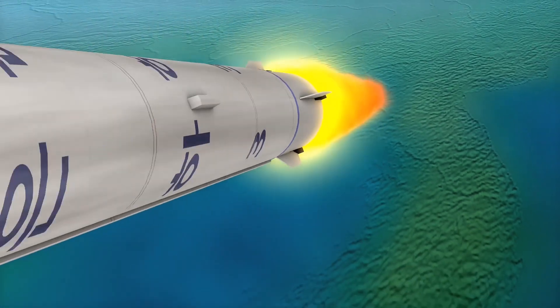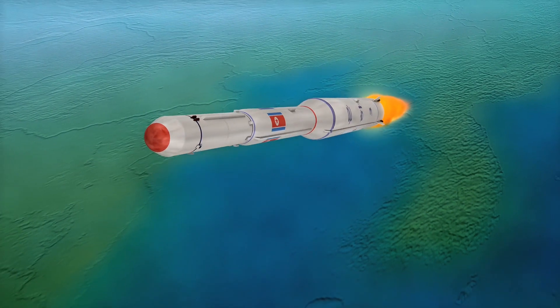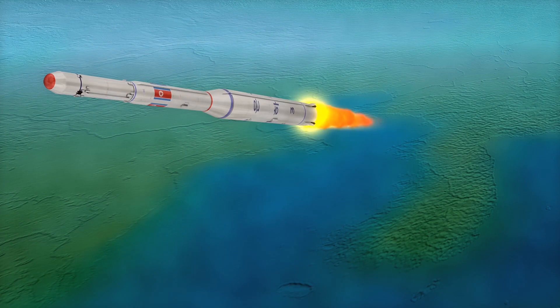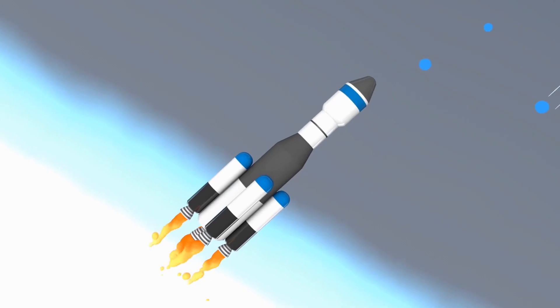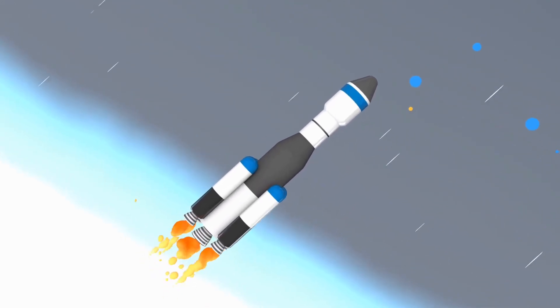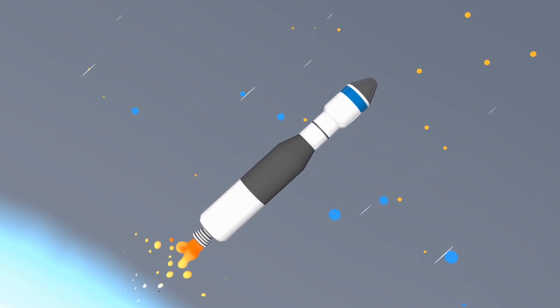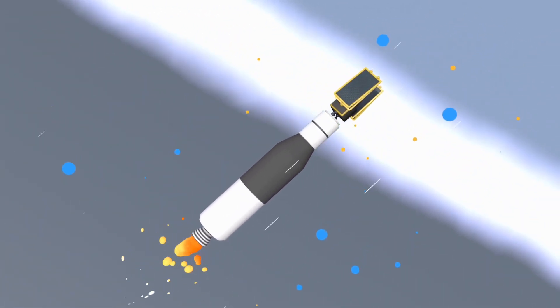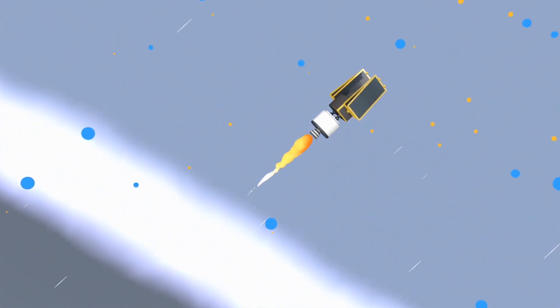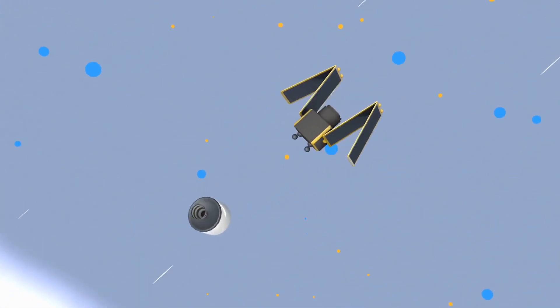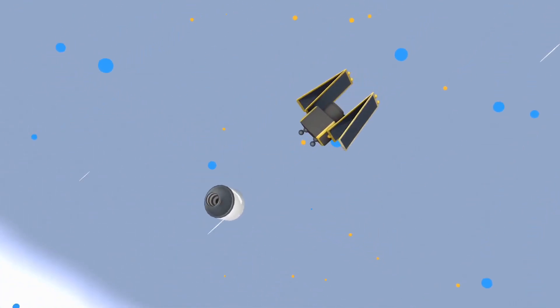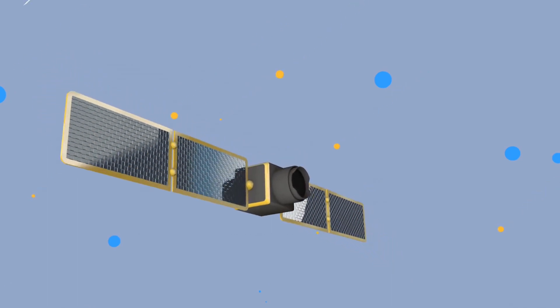5. Staging. Most space rockets are multi-stage vehicles. They consist of two or more stages stacked on top of each other. Each stage has its own engines and propellant. The first stage is ignited at liftoff and provides the initial thrust to lift the rocket off the ground. Once its propellant is depleted, the first stage is jettisoned and the next stage is ignited. This process continues until the final stage carries the payload, such as a satellite or spacecraft, into orbit or beyond.